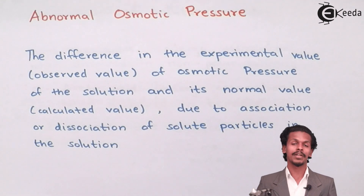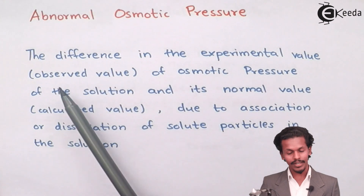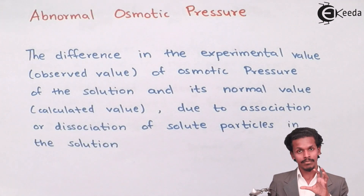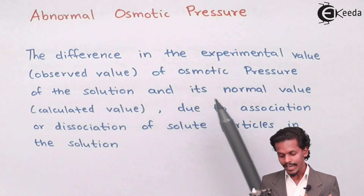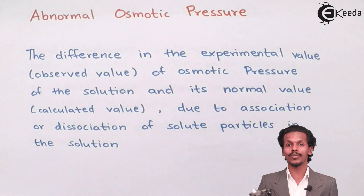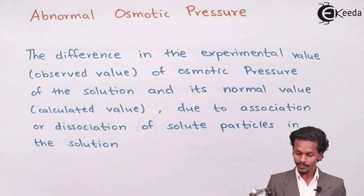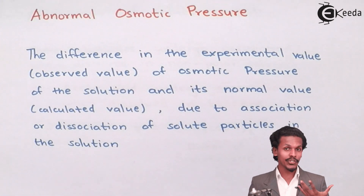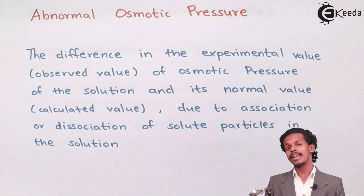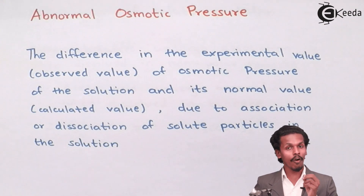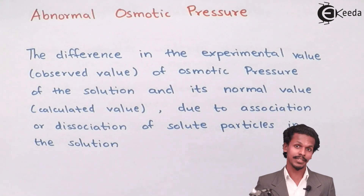So let us see what abnormal osmotic pressure actually is. Abnormal osmotic pressure is the difference between the experimental value — the observed value obtained by testing the solution — and the normal value, that is the calculated or theoretical value. The difference between these two creates an abnormality, and this abnormality arises due to association or dissociation of solute particles present in the solution. This is the most important factor in understanding what abnormality is and how it arises.